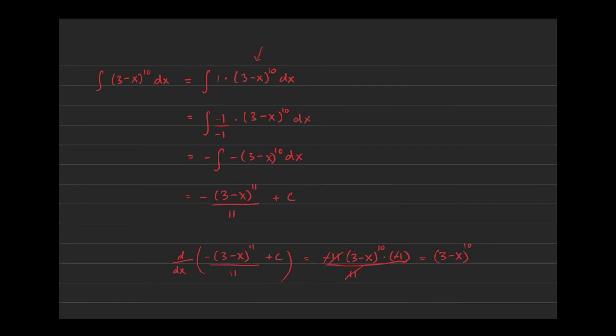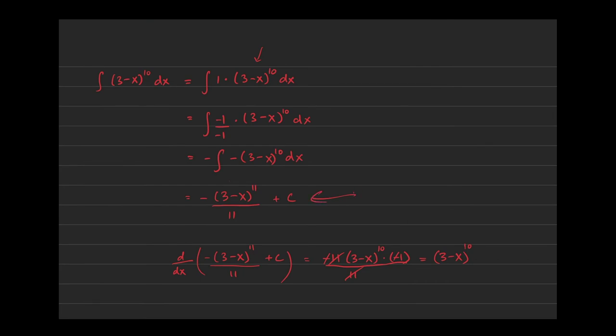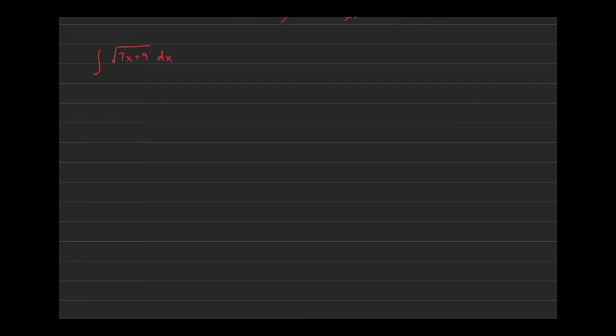So we found a function which when we differentiate gives us the integrand — that's the definition of an antiderivative. Let's do another one where the constants don't exactly match. We need to find the integral of √(7x + 9) dx, which we can rewrite right away as (7x + 9)^(1/2) dx. The derivative of part of the problem is not present, but we're off only by a constant.